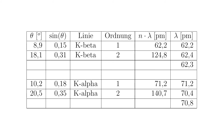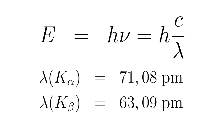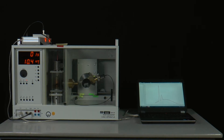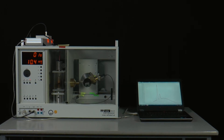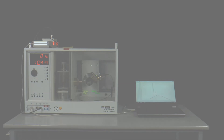In the measurements with the two crystals, we obtain values for the respective wavelengths of the x-rays for the two lines, which according to E equal to h times nu equal to hc divided by lambda corresponds quite well with the literature values, where lambda for k-alpha is 71.08 picometers and lambda for k-beta is 63.09 picometers. This experiment shows the wave nature of x-ray radiation — high energy electromagnetic radiation — and confirms Bragg's law of reflection.